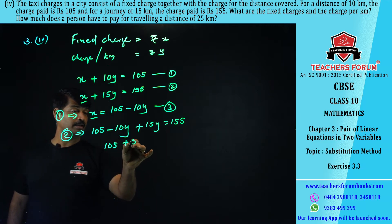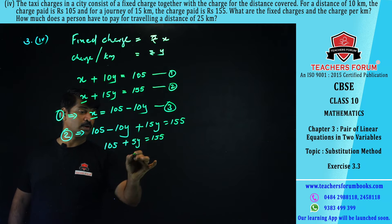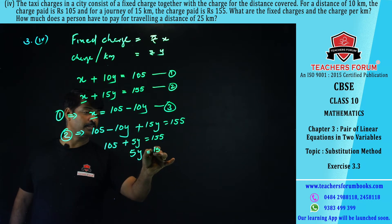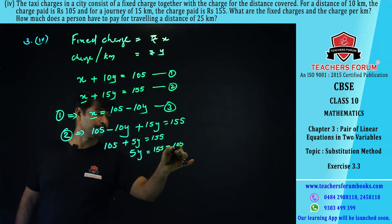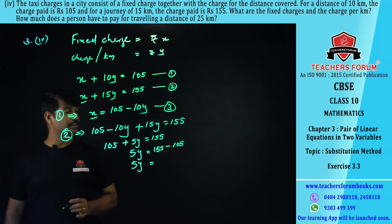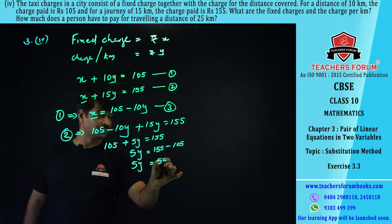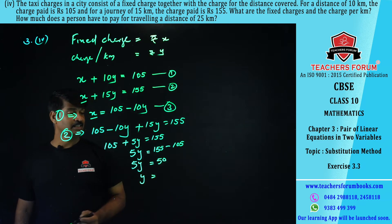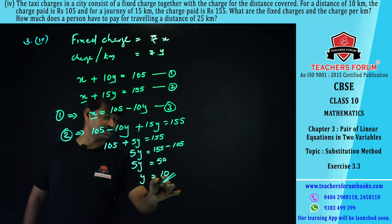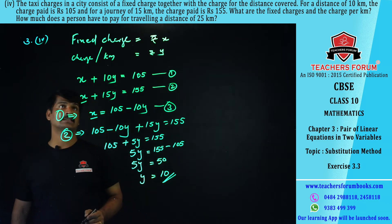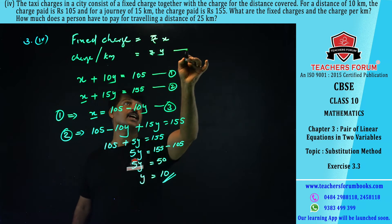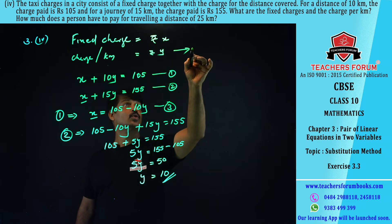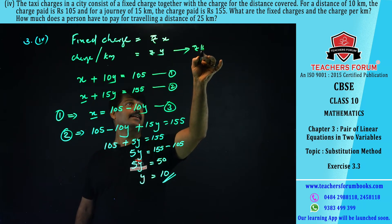This gives: 105 + 5y = 155. So 5y = 155 − 105 = 50, and y = 50 / 5 = 10. The charge per kilometer is rupees 10.